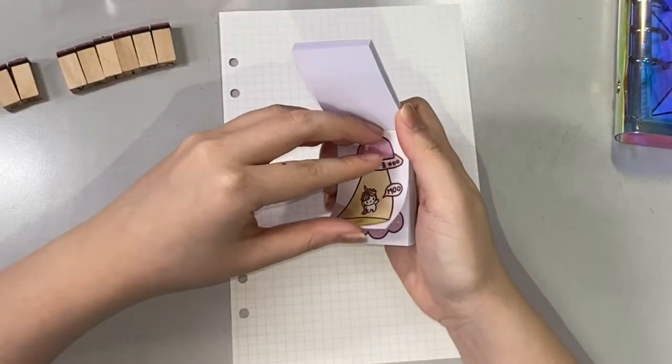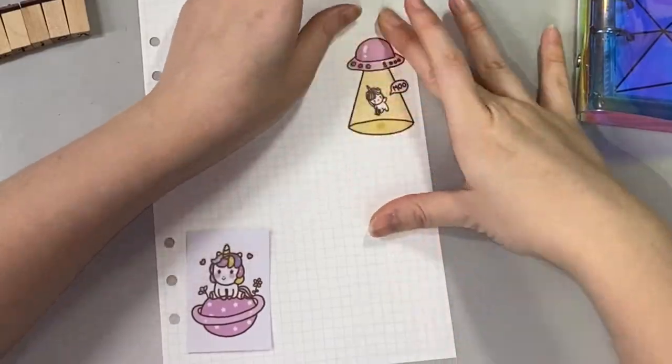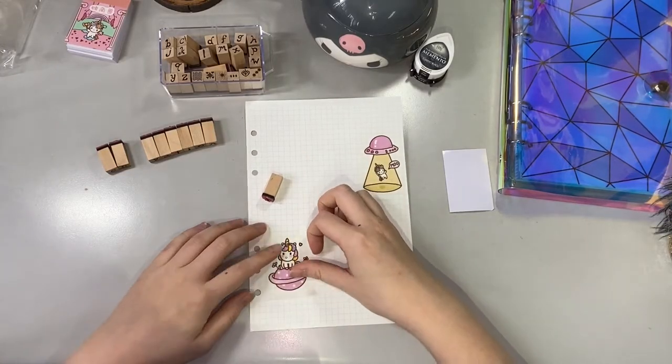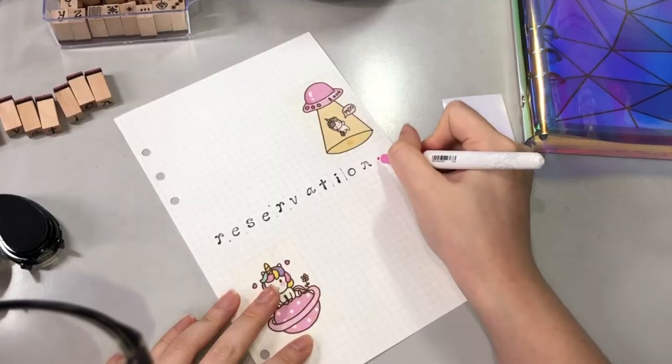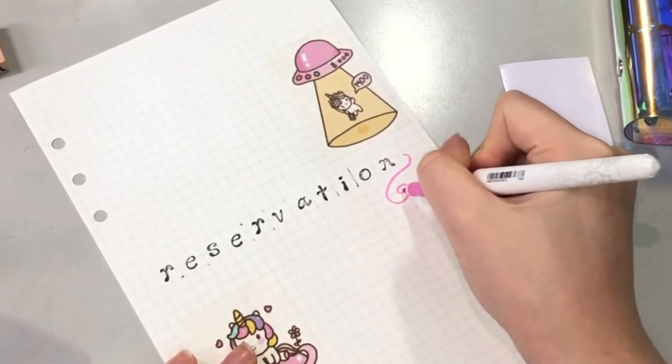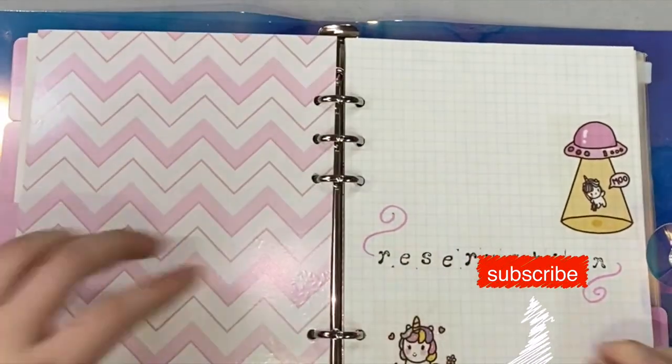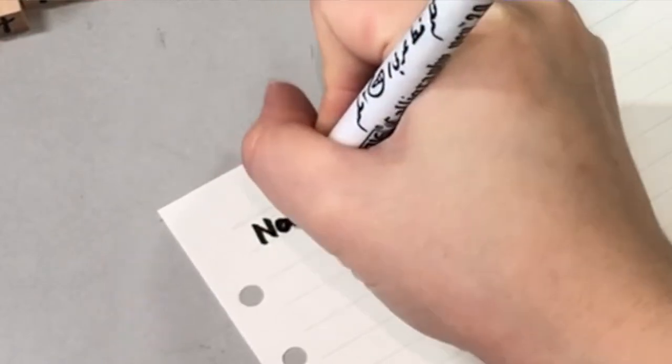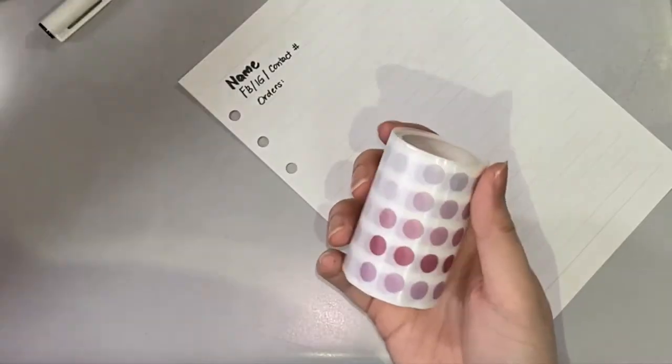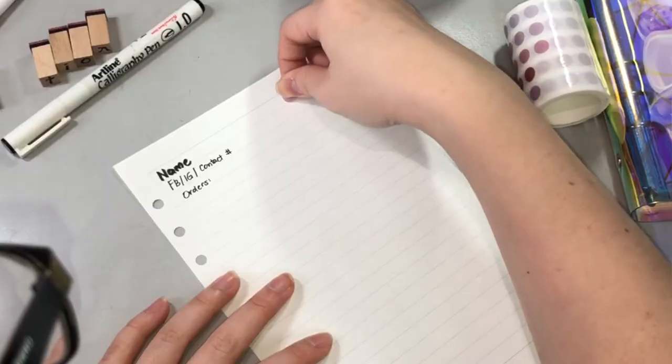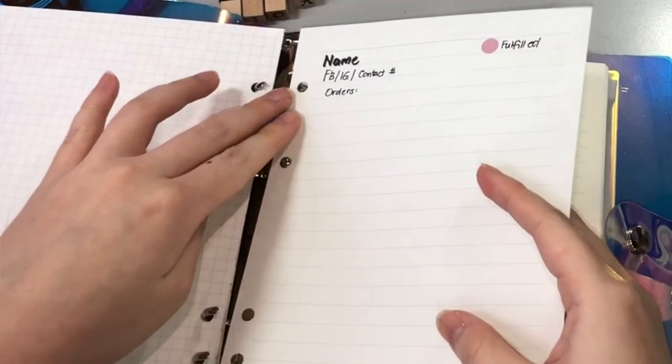The next section will be the reservations section, because this was my problem in the first few months of my business. I tend to forget the people who ask for a reservation of a particular design. So I decided to write them all down so that I will not forget and message them once their reservation arrives. I'm using the unicorn sticker here. Inside we'll put the details: the name, the IG handle, the FB name, the contact number, and the orders. Using this sticker of dots, if it was fulfilled or done already, I'll just check it.